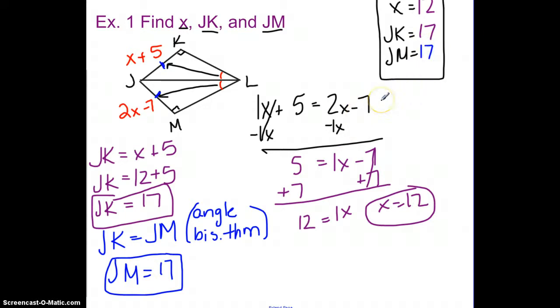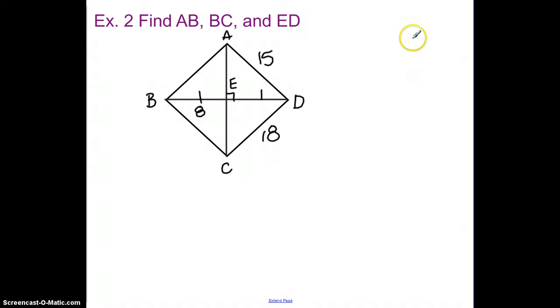So here's one where we've dealt with the angles being bisected. So let's see what we can find with the sides. And our next problem, this one doesn't even ask us to find any letters. They just want to find the length for AB, BC, and ED.